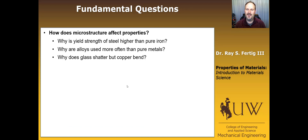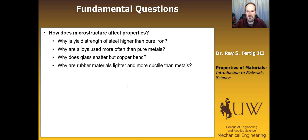Something you may never have thought of: why is it that glass shatters and copper bends? Ceramics in general — glass in particular — have very high strength, so why don't we build bridges out of glass? We want to ask what it is about their structure that gives them properties suitable for some purposes and not others. Another question: why are rubber materials lighter and more ductile than metals? Everybody knows that they are, but very few people can tell you why. We're going to be able to do that by the end of this class.